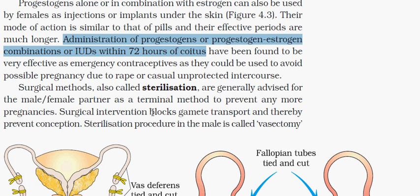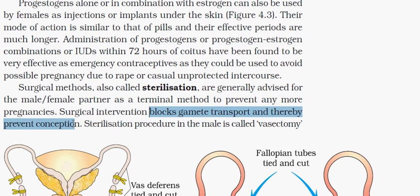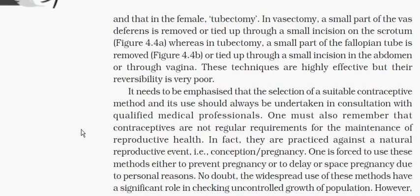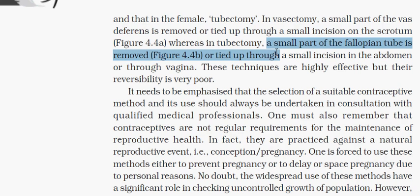In vasectomy, the vas deferens is removed or tied up through a small incision on the scrotum. In tubectomy, a small part of the fallopian tube is removed or tied up through a small incision in the abdomen or through the vagina. These procedures are not reversible — a female cannot become pregnant again, and in males, insemination cannot occur. However, they do not decrease the efficiency of coitus.